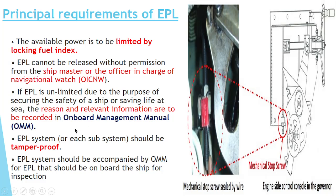In the examination, they will ask you what is the Onboard Management Manual. You should say that it is a recording of an EPL. Basically, the Onboard Management Manual is a type of book in which we record the incidents of the EPL — when it was unlocked, when it was locked, what are the reasons, what is the information, how it is to be operated, and how it can be locked again.